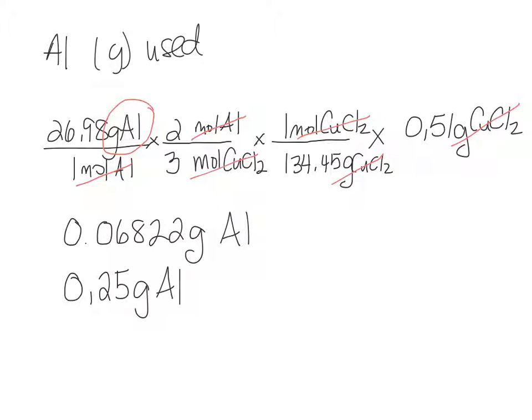The difference between these two numbers is going to be our excess. Grams of aluminum to start minus the grams used in the reaction would equal the grams left over or in excess.